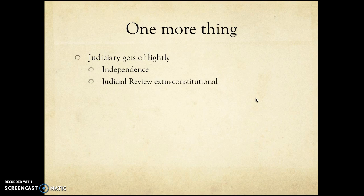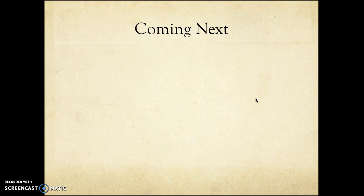I want to stress that the judiciary gets off very lightly from the system of checks and balances. You can't have the rule of law without an independent judiciary, so it follows that they should be outside the system of checks and balances. The process of judicial review itself is extra-constitutional — there is nothing in the Constitution that says judges should exercise judicial review, and from that it follows there's nothing in the Constitution that allows anybody to do anything about that exercise of judicial review. This gives rise to the idea of the imperial judiciary, or judicial rule — politicians in robes.